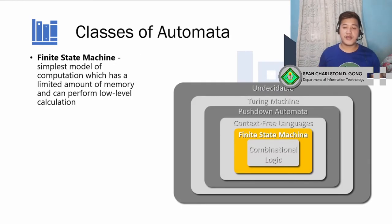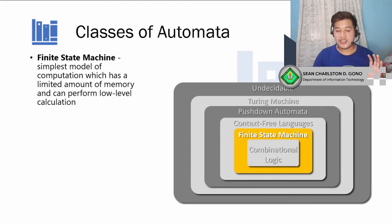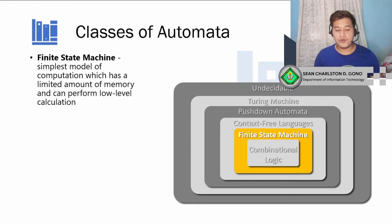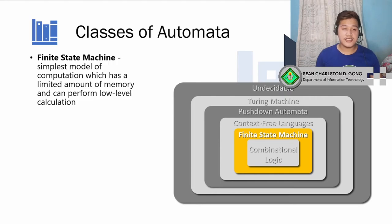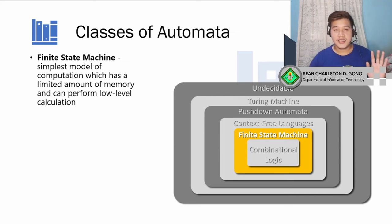We already discussed combinational logic, so we're going to start with finite state machines. Whenever you hear automata, finite state machine is typically what's being referred to. This is the simplest model of computation, having a limited amount of memory and performing low-level computation. The best example is the turnstile machine in the MRT — when you swipe your card, the machine allows you to turn it to pass. This is the simplest model of computation in automata.